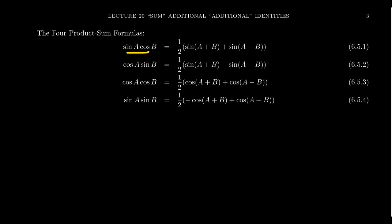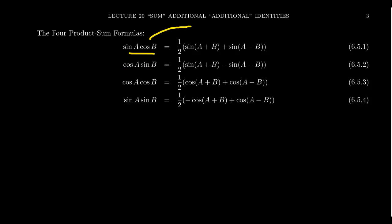There are four possibilities: sine of A times cosine of B, cosine of A times sine of B, cosine of A times cosine of B, and sine of A times sine of B — so sine-cosine, cosine-sine, cosine-cosine, or sine-sine with different angles. The product-to-sum identities will transform these products into sums or, in some cases, differences of sines and cosines.